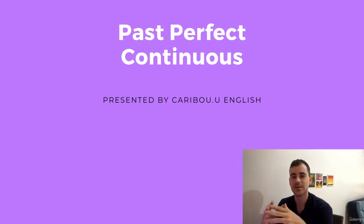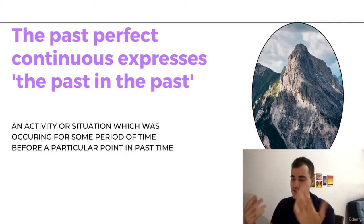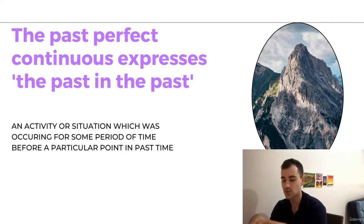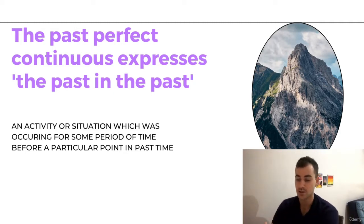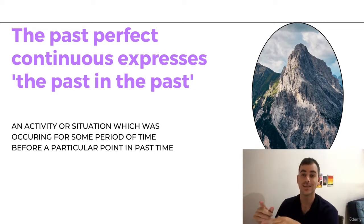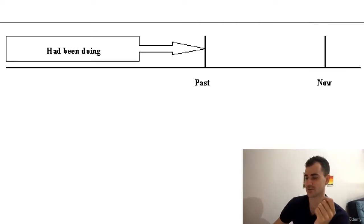It's part of a video series of 12 lessons on all 12 tenses. The past perfect continuous expresses the past in the past. It's an activity or situation which was occurring for some period of time before a particular point in past time. That's a lot to understand, so let's look at some examples.